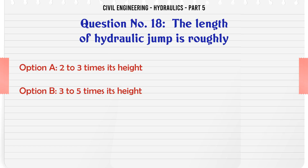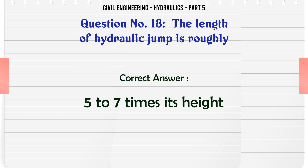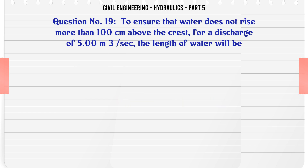The length of hydraulic jump is roughly: A. two to three times its height, B. three to five times its height, C. five to seven times its height, D. none of these. The correct answer is five to seven times its height.